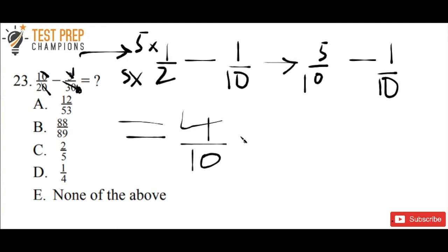But we can simplify this even further. Let's divide both numbers by 2. So 4 divided by 2 is 2, and 10 divided by 2 is 5. We've got 2/5, which is our answer.